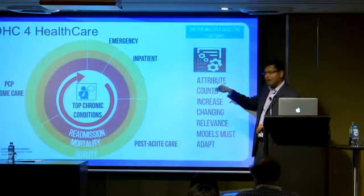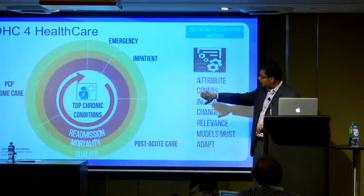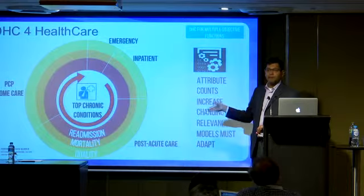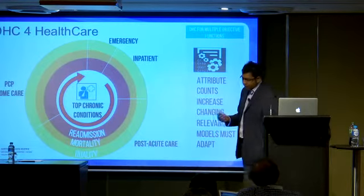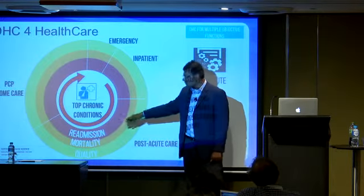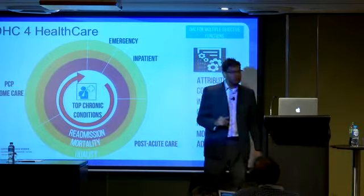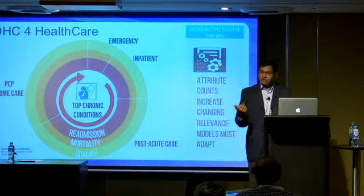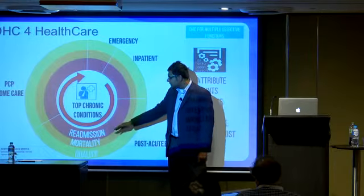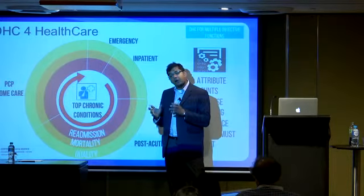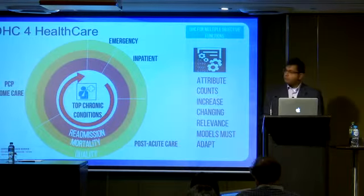Unfortunately, this linear view of healthcare is entirely wrong. The view of healthcare is more like a cycle of chronic care where patients get admitted, face difficulty in care, and that care is never complete — so they keep coming back. The problems of readmission, mortality, and quality of care are all highly correlated, so you need solutions that target not just one objective function such as readmission but also other highly correlated objectives.